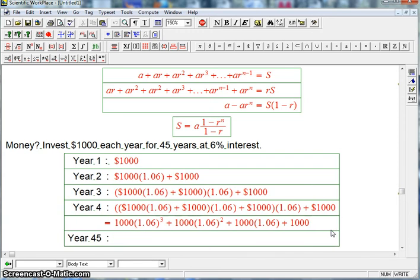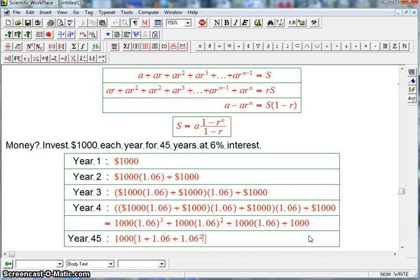In year 45, we're going to get 1,000...I'm going to take that out as a common factor... times 1. That's the one that wouldn't get multiplied by 1.06. Plus 1.06. Plus 1.06 squared. Plus 1.06 cubed.